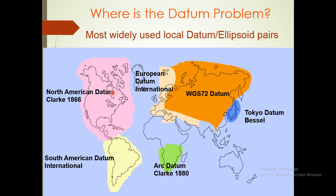Where is the datum problem? The most widely used local datums differ by region. North America uses the North American Datum with the Clarke ellipsoid. South America uses an international ellipsoid. The Clarke ellipsoid is also used in other areas. Tokyo uses its own datum because of its earthquake history — it needs to be very precise, so it must use its own datum vessel.